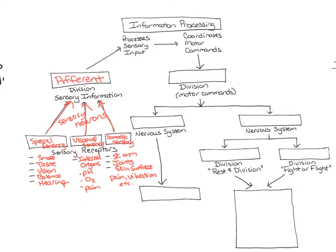If sensory information enters the spinal cord, it must ascend to reach the brain. Once in the brain, the information is integrated with other areas and processed. From that sensory data, the brain determines whether a motor command needs to be issued, and that motor command is then sent through the efferent division.